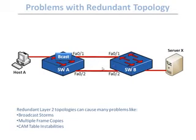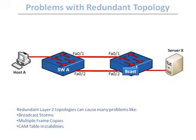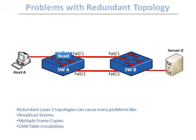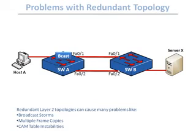Let's see what happens when we send it through F01. When switch A sends the broadcast through F01 and switch B receives it, switch B has to do exactly the same thing as switch A — send it through all ports except the originating one. Since it received the packet through F01, it sends it through F02. This broadcast is then received back by switch A, which again must send it through all ports except the originating one.